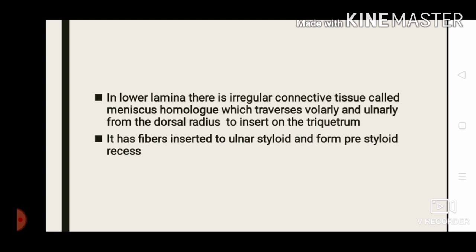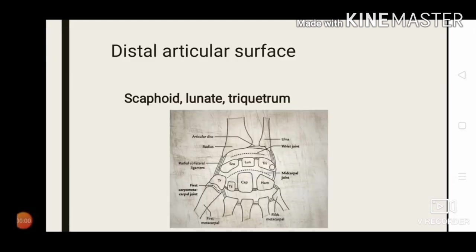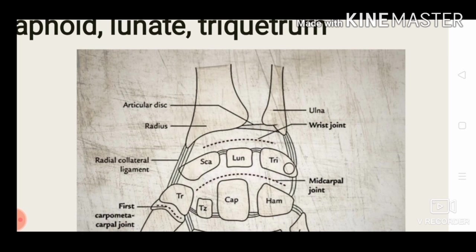The meniscus homolog also has fibers inserted into the ulnar styloid, forming the pre-styloid recess. The distal articular surface of the radiocarpal joint is formed by the scaphoid, lunate, and triquetrum — the bones of the proximal carpal row. These bones are interconnected by two ligaments: the scapholunate ligament and the lunotriquetral ligament. The carpal row and its ligaments act as a single joint surface and can change shape to accommodate the demands of the forearm and hand.